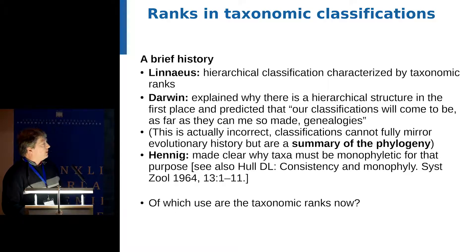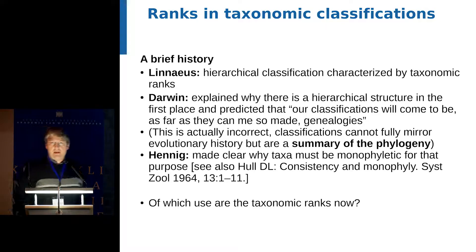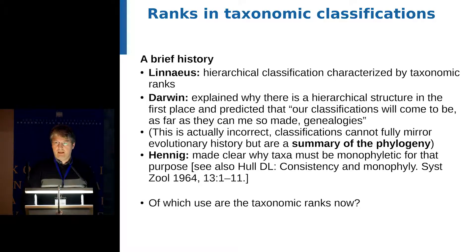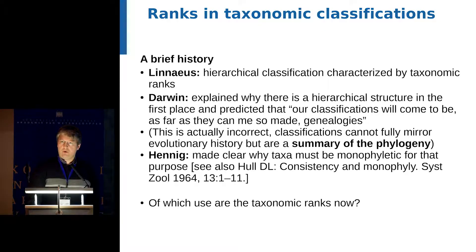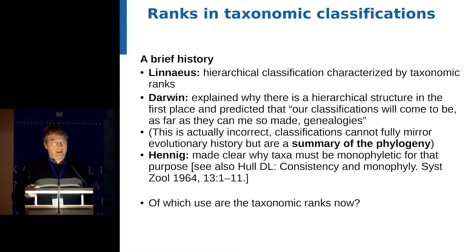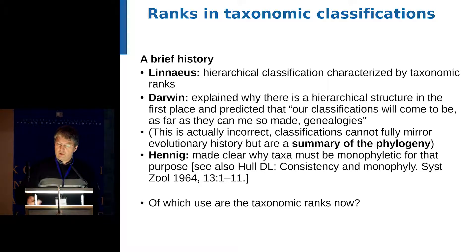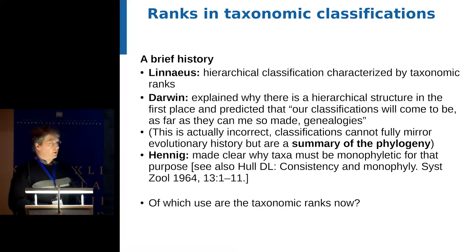That was a little bit of overkill because we all know that we have to summarize phylogenies — we can't just mirror them in taxonomic classification. Hennig made clear that in order to act as a summary of the phylogeny, taxa must be monophyletic. It is historically obvious that taxonomic ranks had been introduced before it was clear that taxonomic classification has to do with phylogeny. So the question is: of what use are taxonomic ranks now?